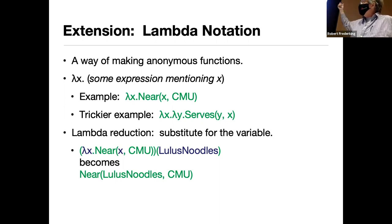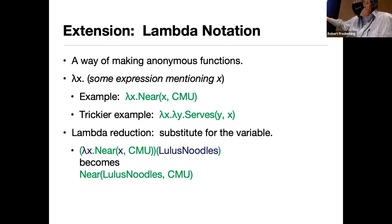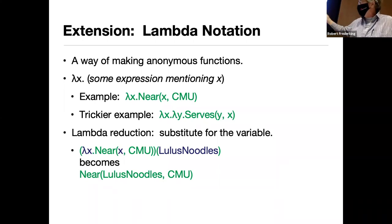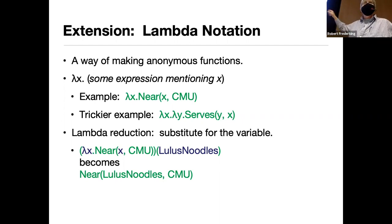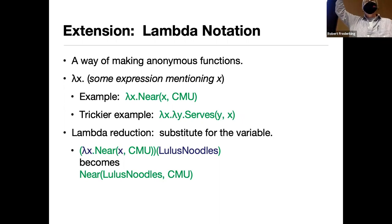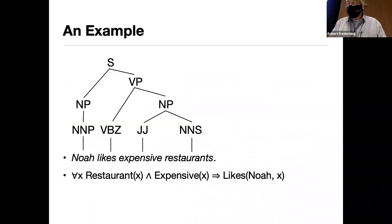The basic idea is you're producing a function: lambda X of something combines with a variable to replace X inside with whatever that variable is. So 'lambda X near(X, CMU)' applied to 'Lotus Noodles' replaces all the X's with Lotus Noodles. That's all — it's just argument replacement, like arguments in a procedure substituted at runtime into formal arguments in the formula.